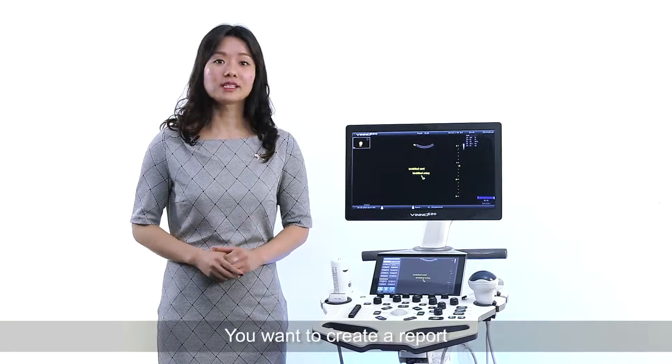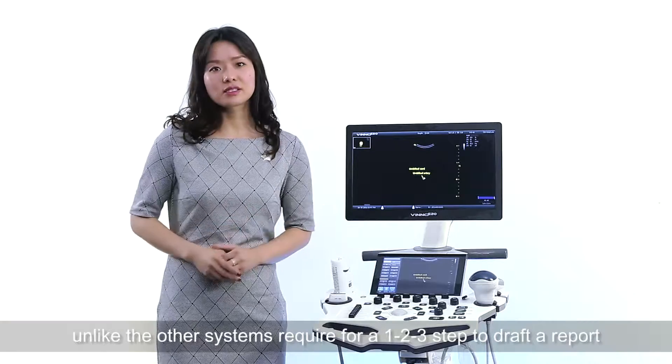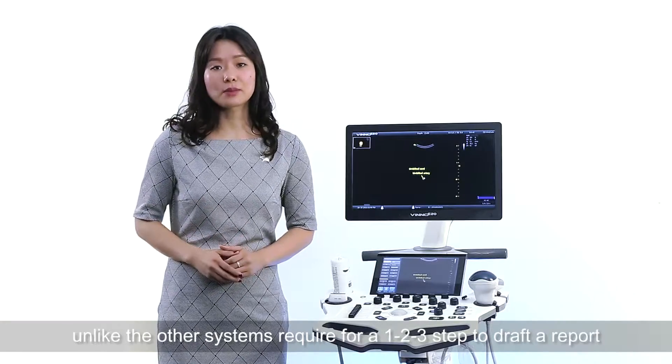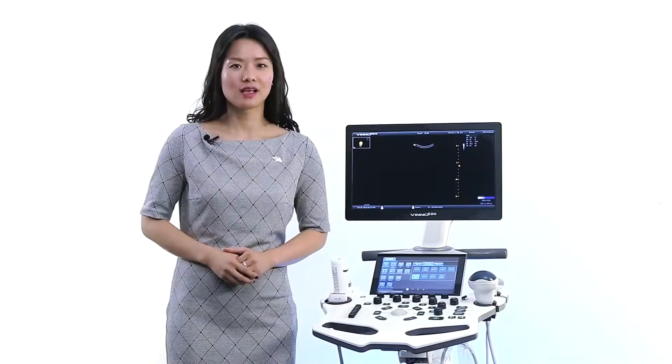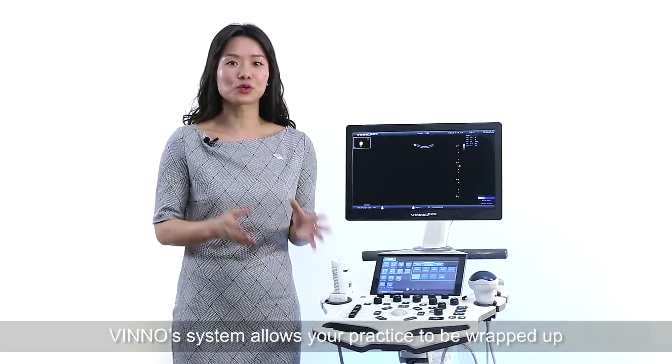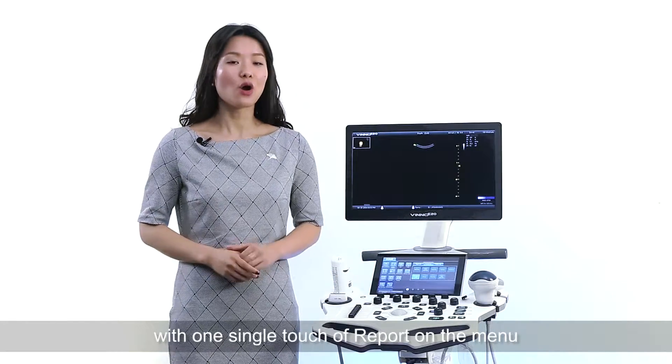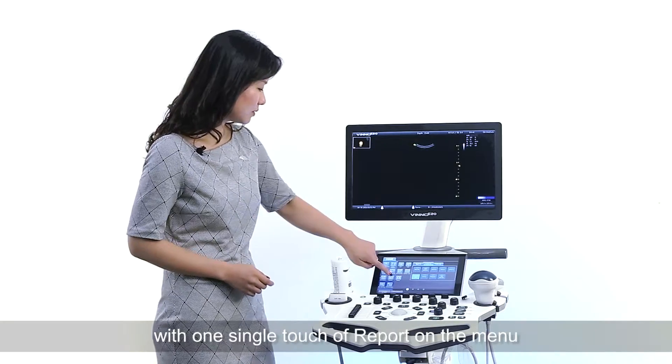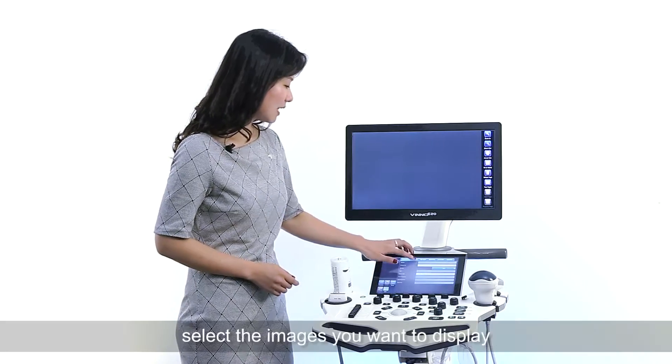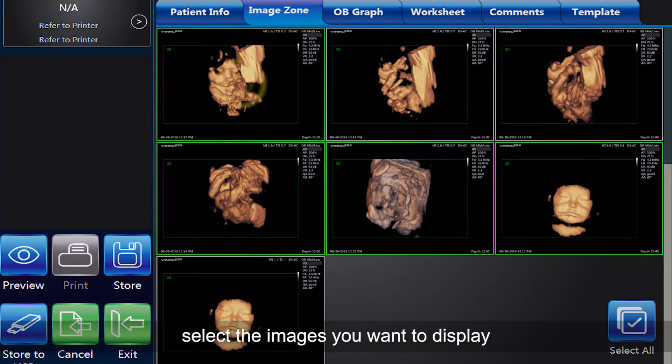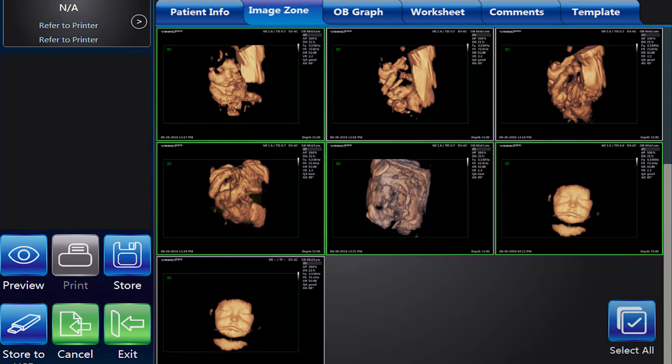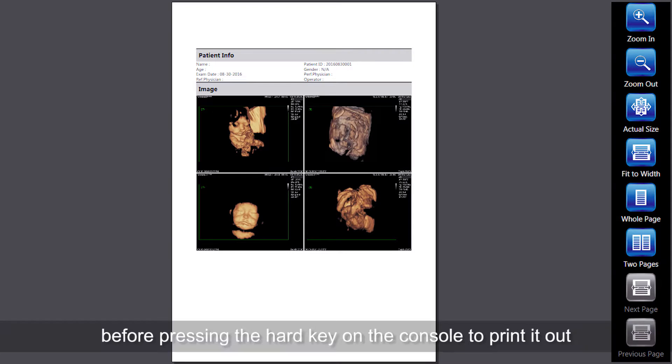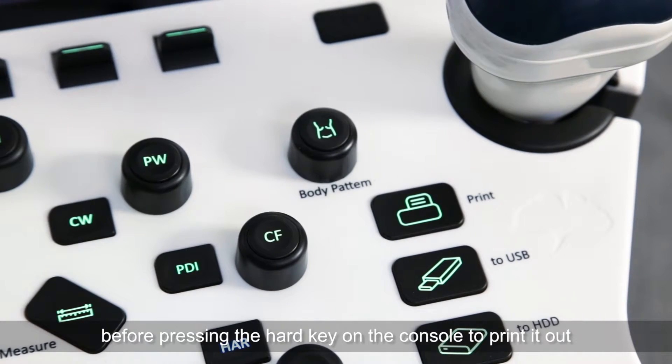What's next? You want to create a report. Unlike the other systems that require one-two-three steps to come up with a report, the Vino E20 allows your practice to be wrapped up with one single touch of report on the menu. So select the images you want to display. You're able to preview the report before pressing the hard key on the console to print it out.